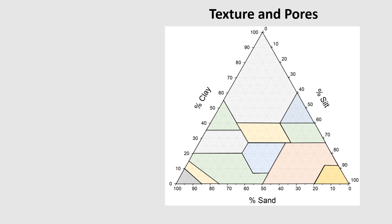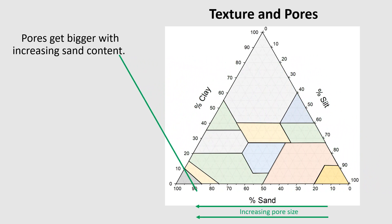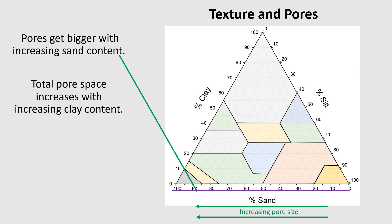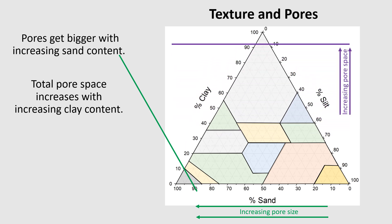The size of the particles influences the size of the spaces between the particles — those spaces are called pores. The pores get bigger as sand content increases; moving from 10% to 100% sand, those are the biggest particles so the spaces between them are bigger. However, the total pore space gets larger as you go up in clay content too, because even though clays are the super tiniest particles, there are millions more spaces. Overall, clays tend to have more total pore space than sands.